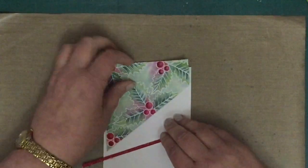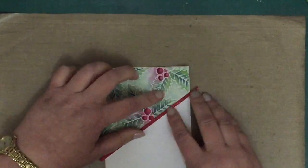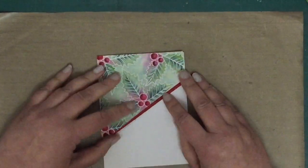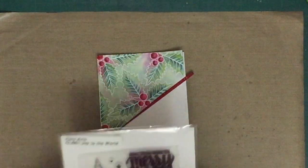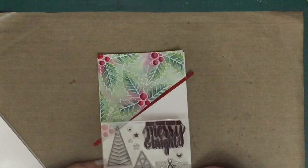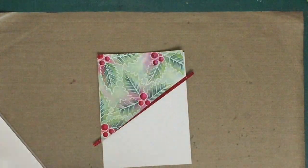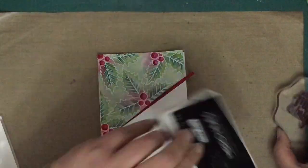All right, so I have just taken some red glimmer paper from Stampin' Up and made a tiny little strip to go underneath my diagonal panel. Now I'm going to stamp my sentiment.